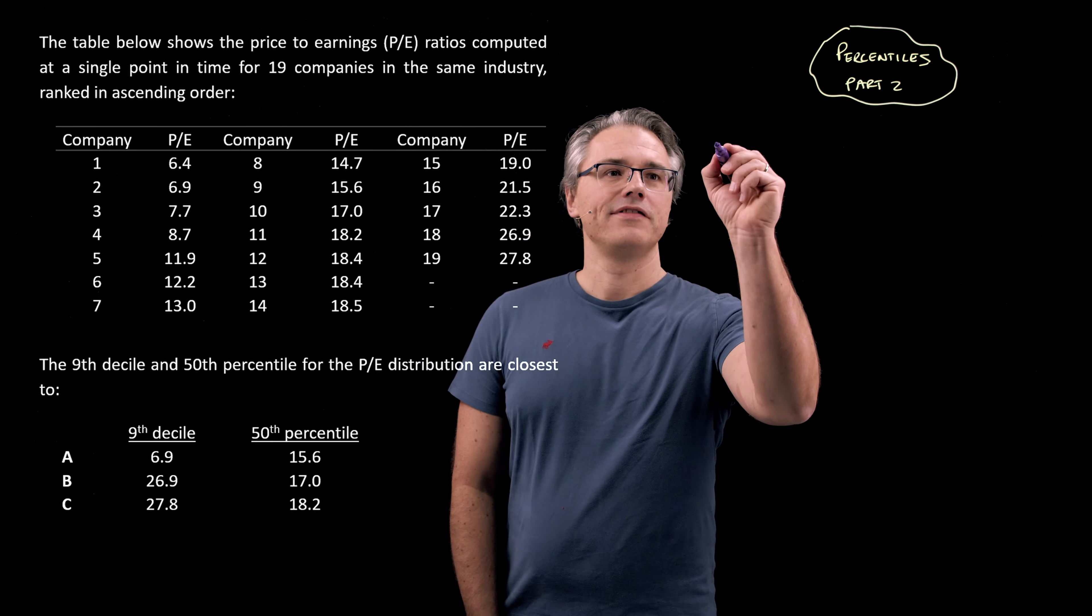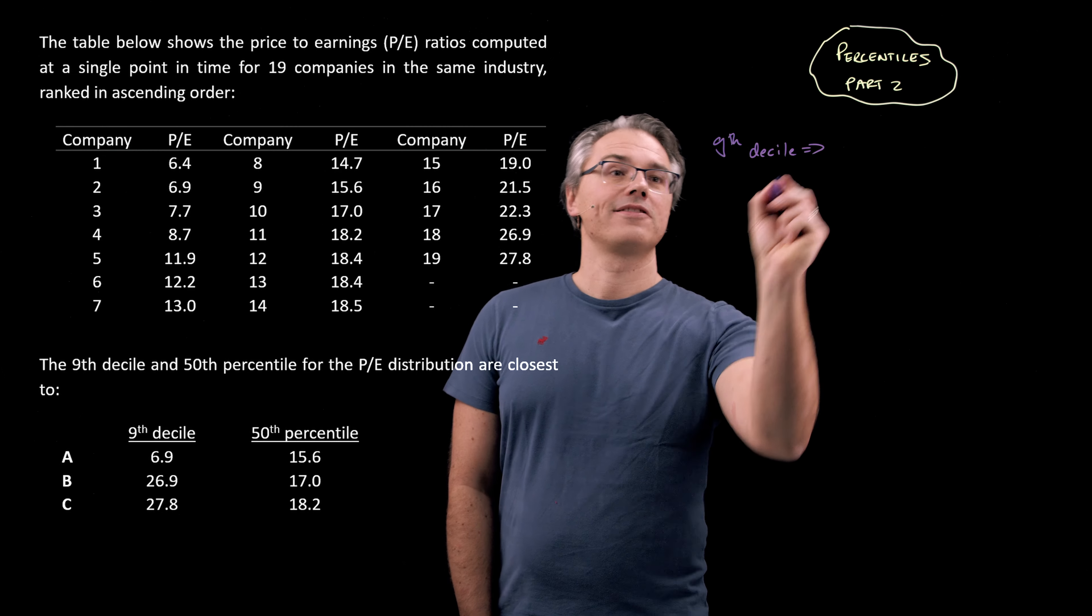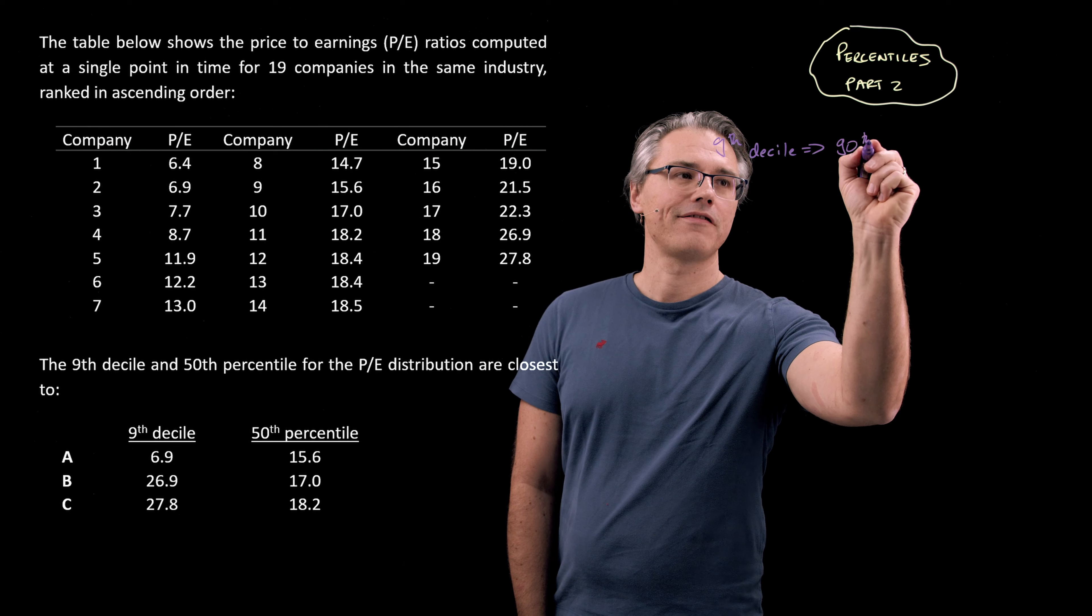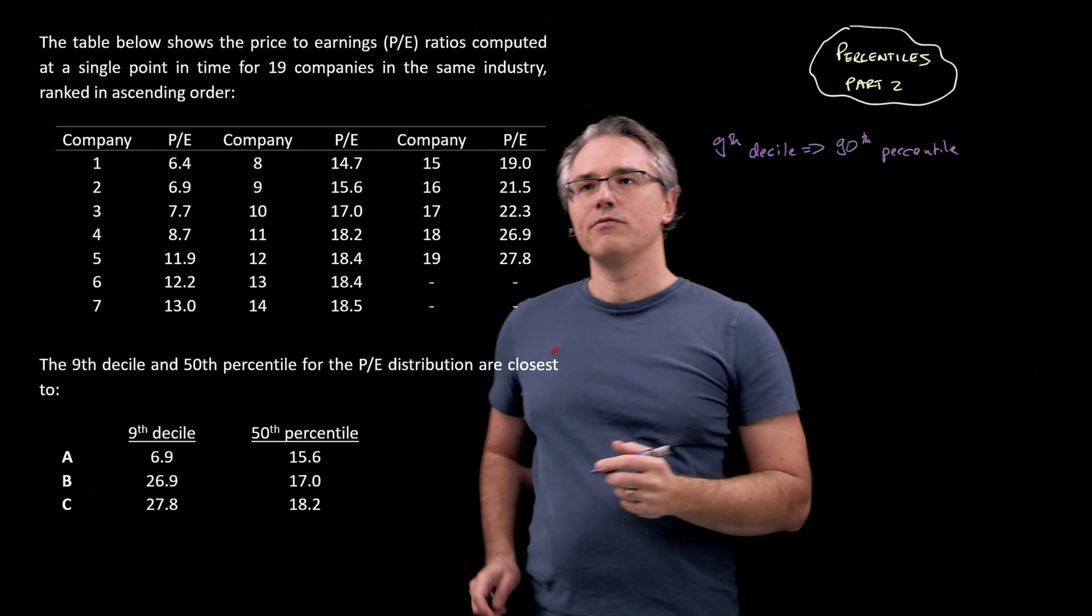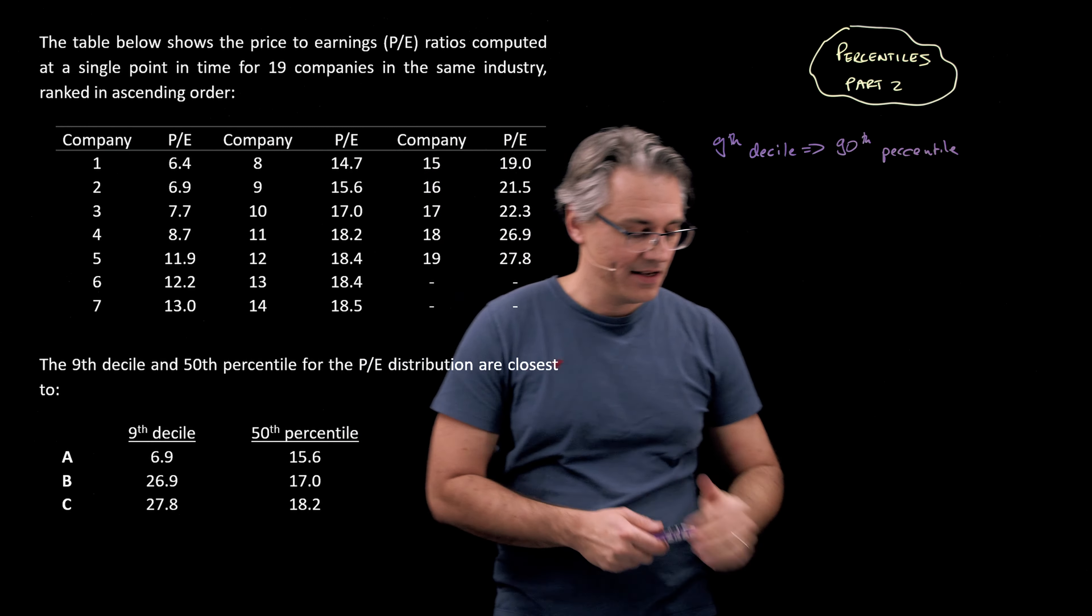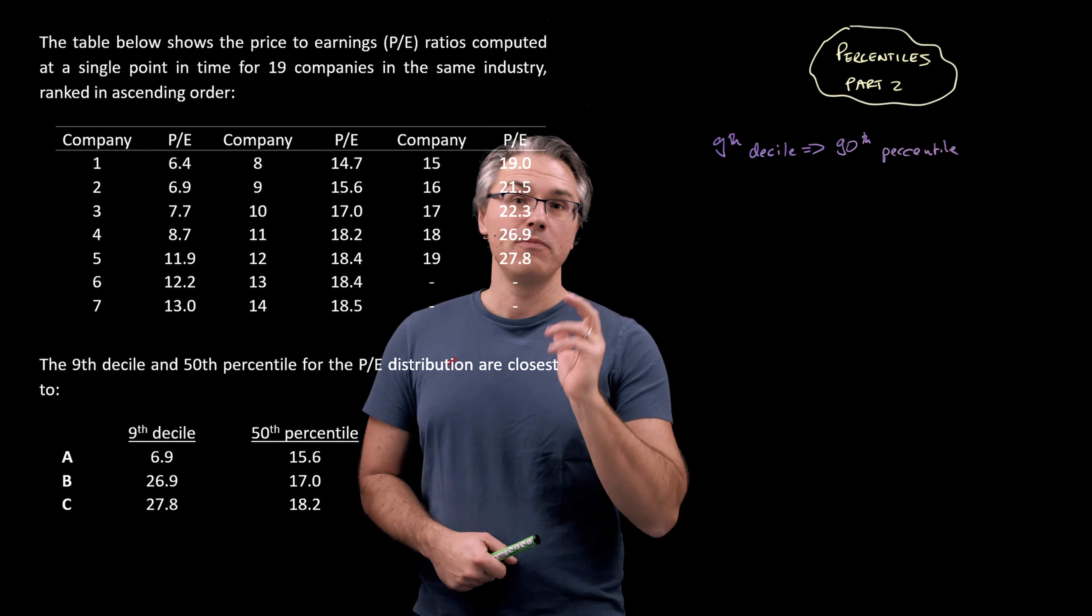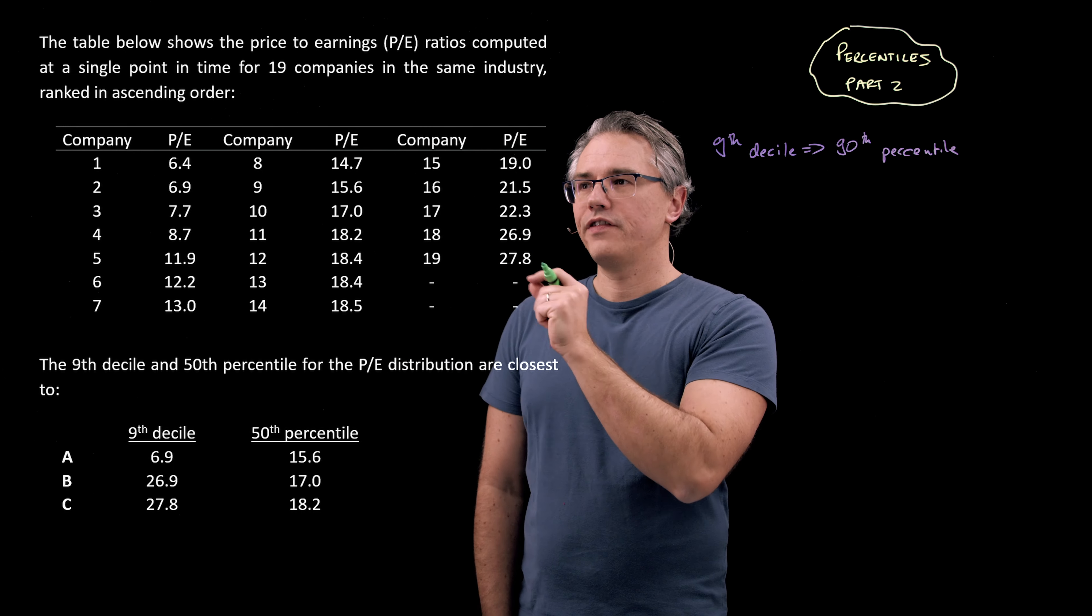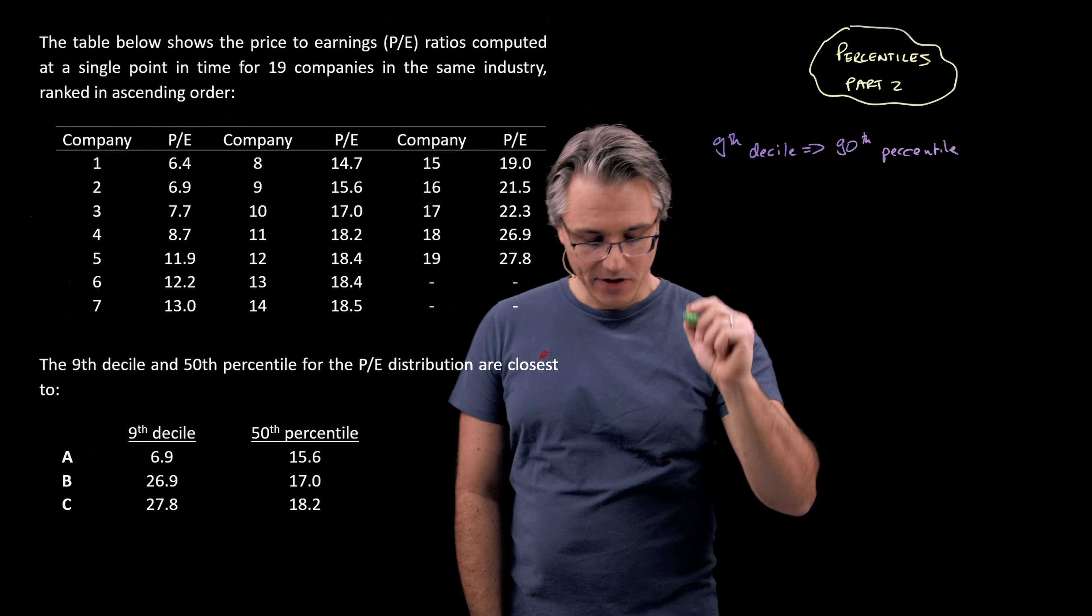Now, let's deal with the ninth decile. The easiest thing to do is simply to first turn it into a percentile. So that's going to be the 90th percentile, isn't it? And the thing you have to be really careful with is first locating the observation number. So which observation is going to act as the 90th percentile?